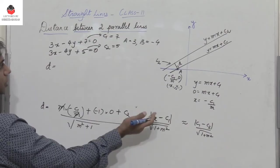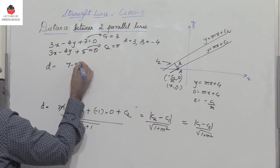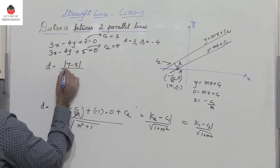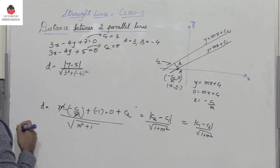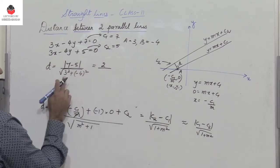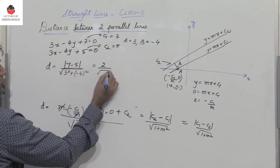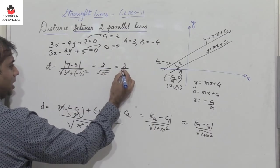So d equals c1 minus c2. We just have to take the difference. So 7 minus 5 magnitude divided by a square which is 3 square plus b square is minus 4 square. 7 minus 5 is 2 divided by 3 square plus 4 square is root 25. So it is 2 by 5 units.